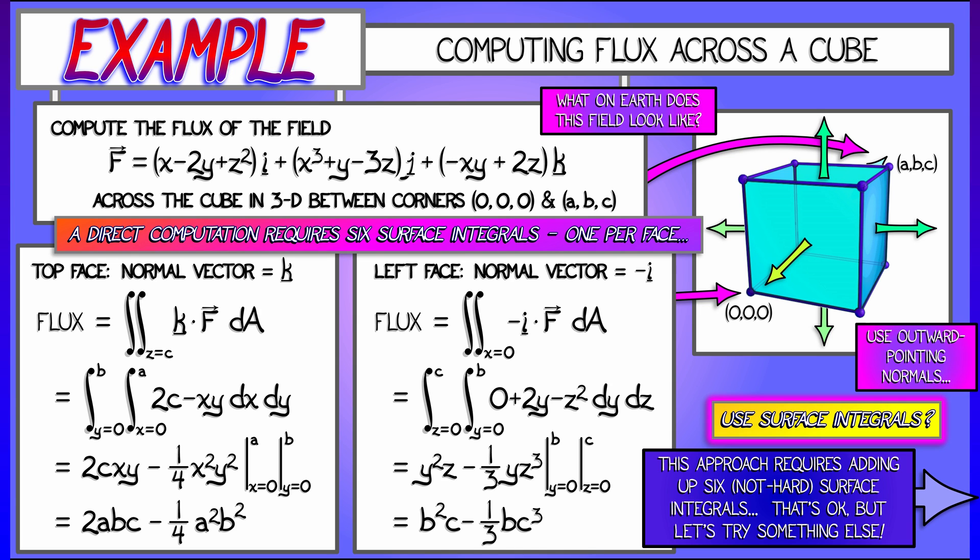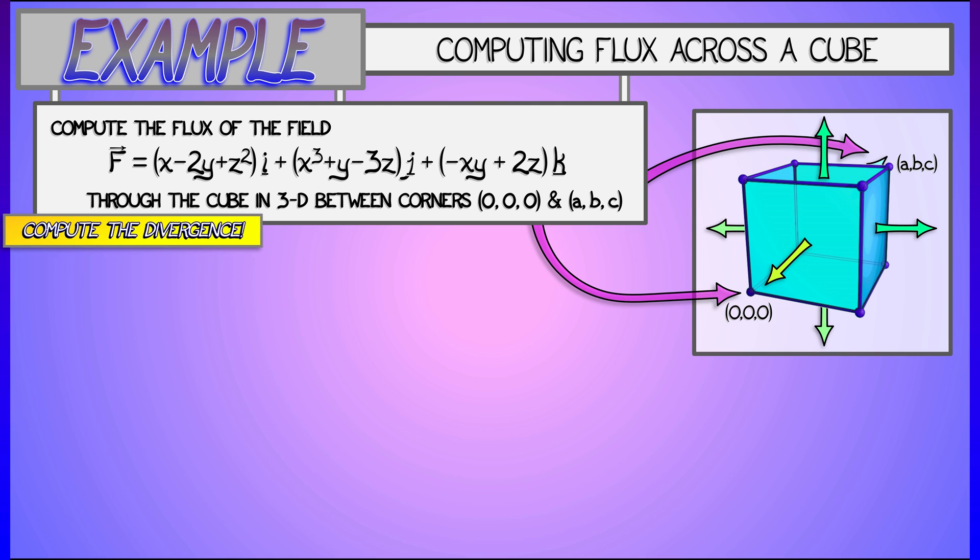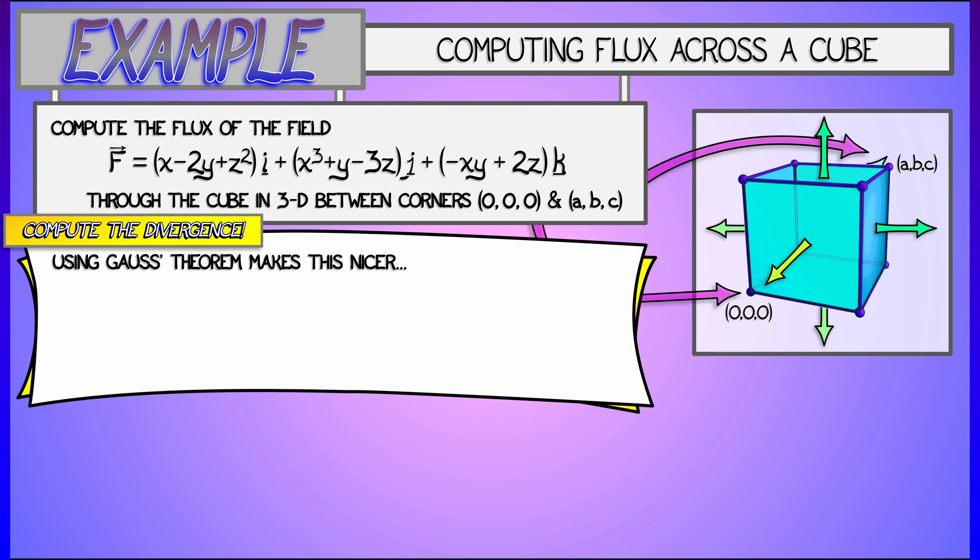Let's try using the divergence. Using Gauss's theorem is going to make this so much nicer. What is the divergence of f? That's easy. That's the partial with respect to x of (x - 2y + z²), plus the partial with respect to y of (x³ + y - 3z), plus partial with respect to z of (2z - xy).